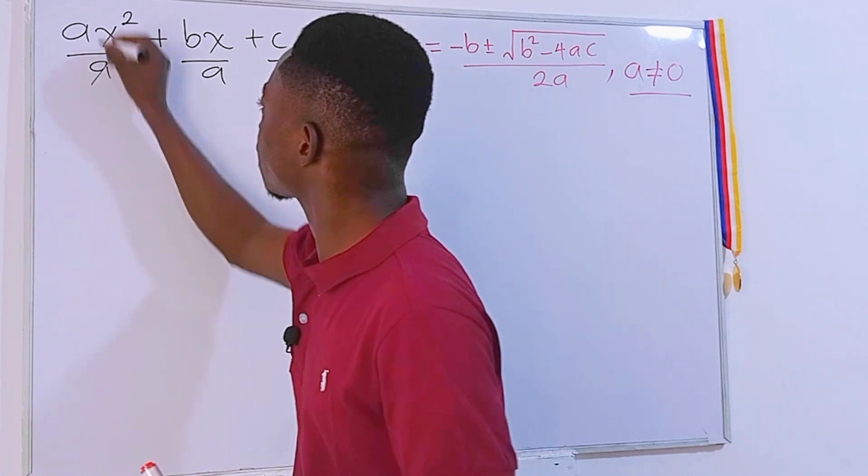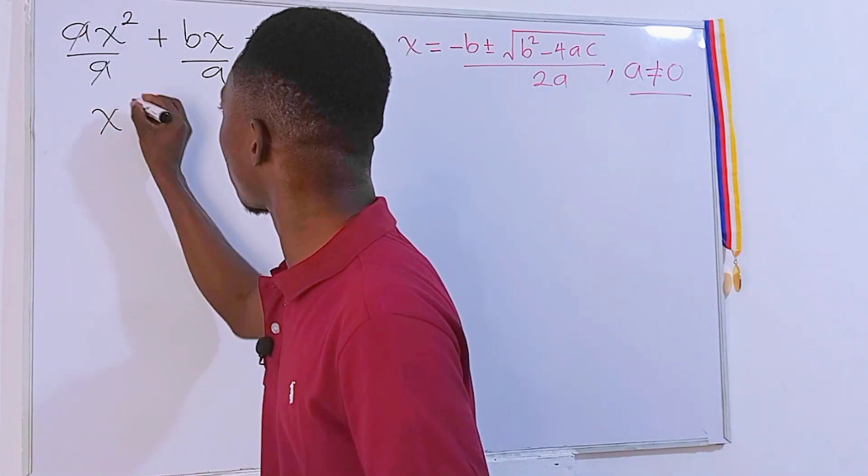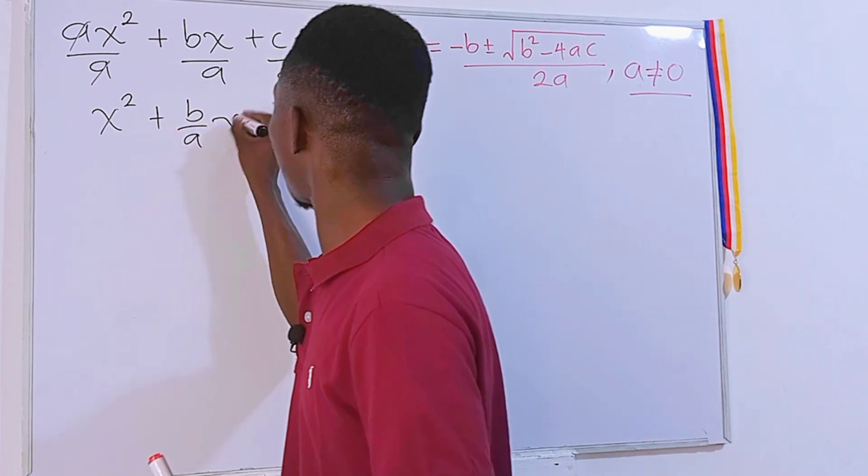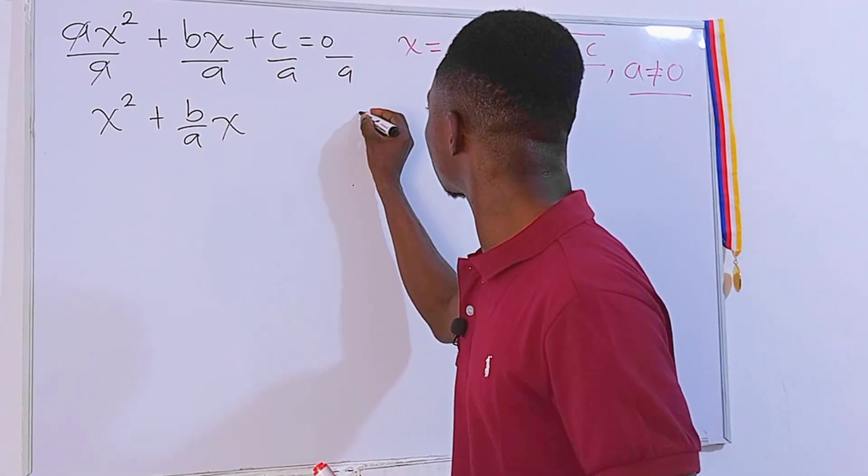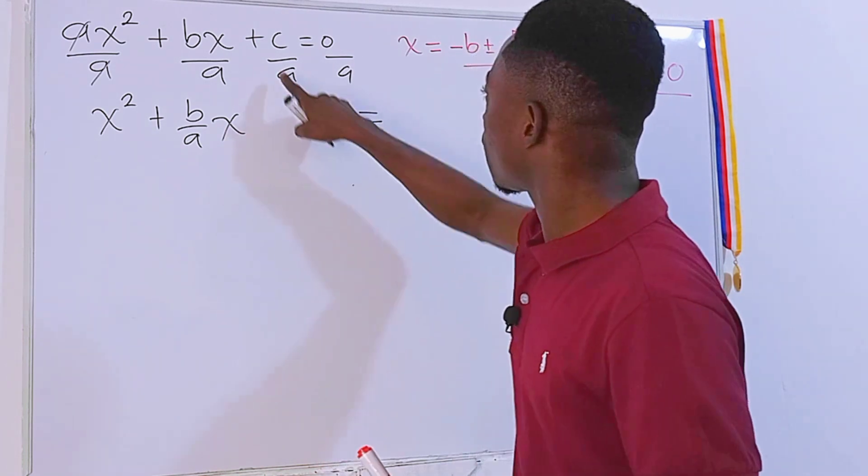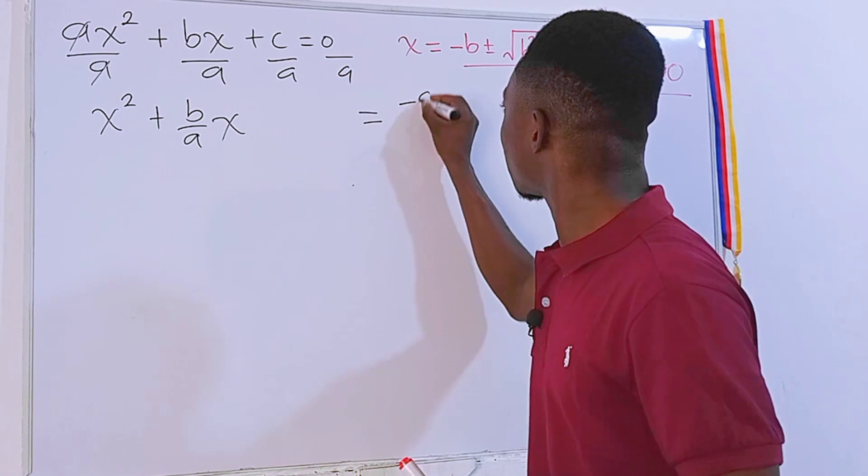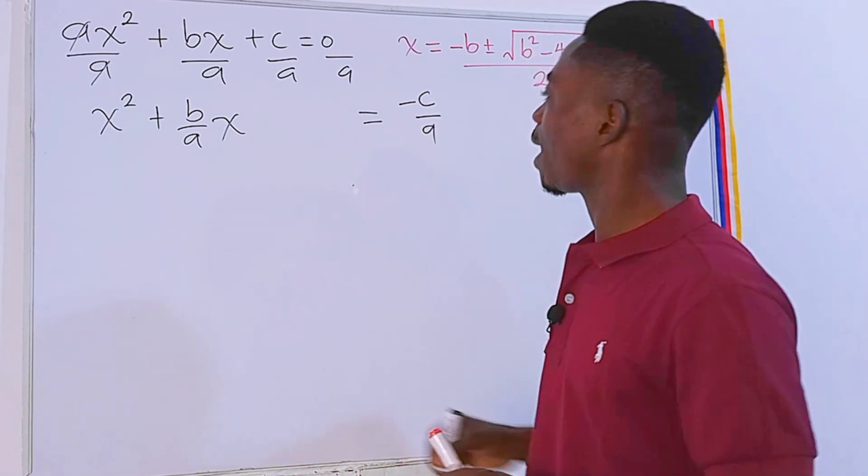So that this and this will go and we'll be left with x to the power 2 plus b over ax, just like this. Then I will leave a huge space and then come here. But I will just transpose c over a, which will be negative c over a, just like this.